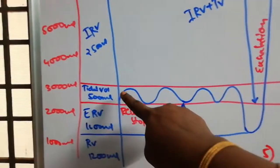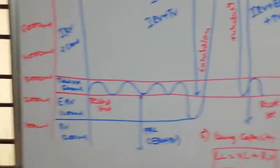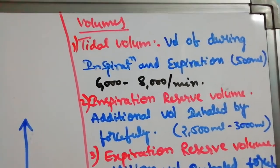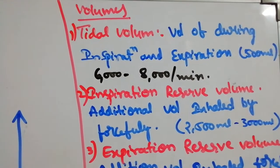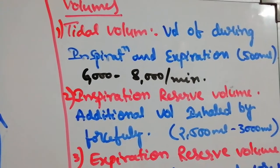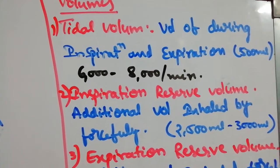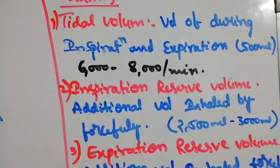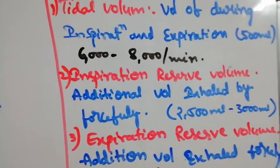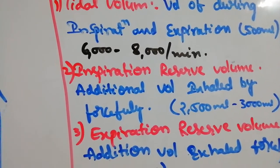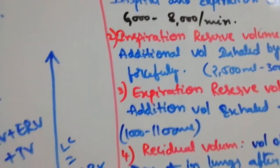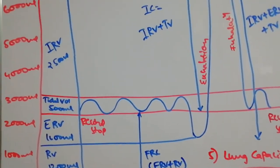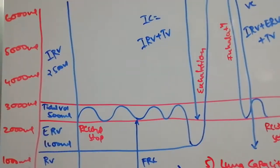The normal breath we take — inhalation and exhalation — is called tidal volume. Tidal volume is the volume of air during normal inspiration and expiration, and it is generally 500 ml. We breathe 12 to 18 times per minute, meaning 6,000 to 8,000 ml, or 6 to 8 liters per minute, undergoes inhalation and exhalation.